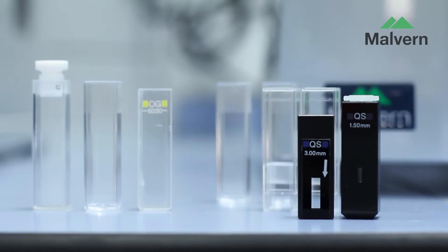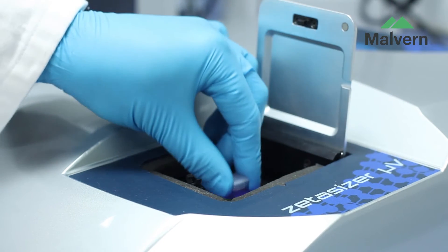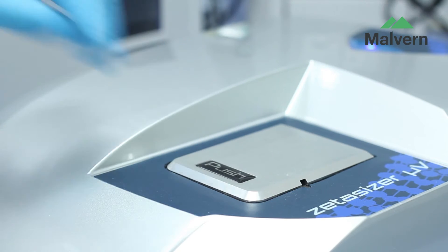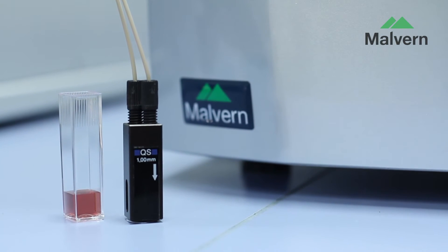For batch DLS, many cuvette types can be used in the Zetasizer Micro V, giving you flexibility over how to analyze your sample from large and small volume disposable cuvettes to high-quality quartz cells down to just 2 microliters.